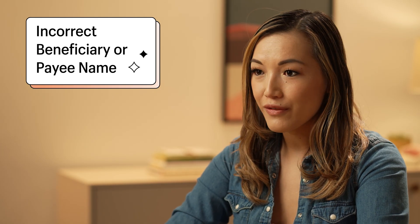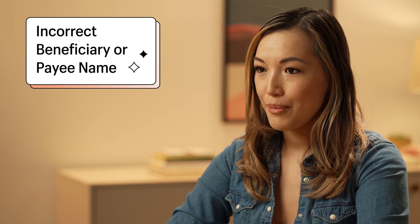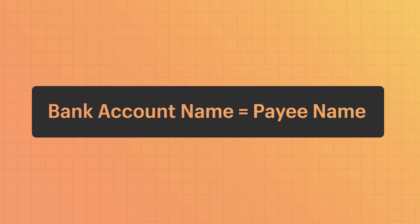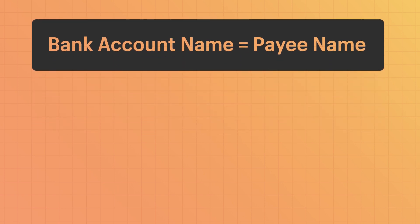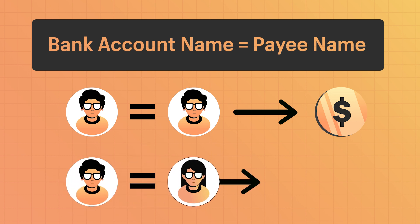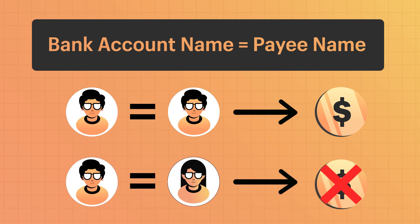It might also be that you have an incorrect beneficiary or payee name. The payee name for your payout should be the same as the one on your bank account — if these don't match, the bank might reject the payout. For example, if the bank account is registered to Mohammed, the payee name needs to be Mohammed too. If the bank account is under Mohammed but the payee is listed as Omar, that payout is going to fail. Update your bank account details with Shopify Payments to avoid another failed payout.